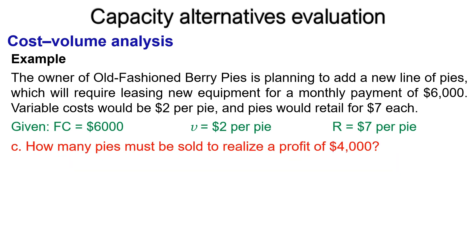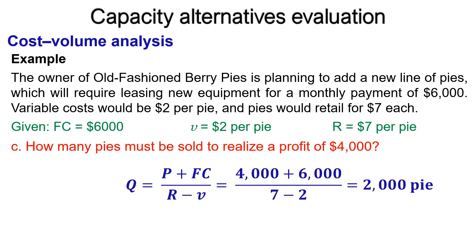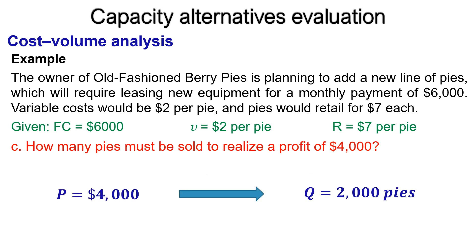The third question is to find the quantity needed to make a profit of $4,000. Substituting into the formula: Q = (4,000 + 6,000) ÷ (7 − 2) = 2,000 pies. So, to make a $4,000 profit, 2,000 pies would need to be produced and sold.